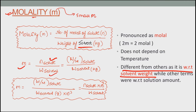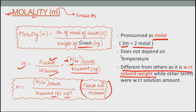Molality = number of moles of solute upon weight of solvent in kilograms. Number of moles = given weight ÷ molar mass. If the weight of solvent is in grams, multiply by 10⁻³ to convert to kilograms. It is pronounced in molal, so 2m = 2 molal. Since there is no volume term, molality does not depend on temperature.